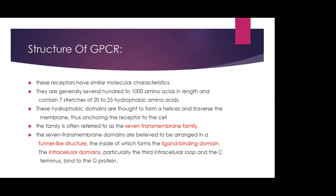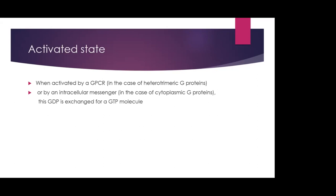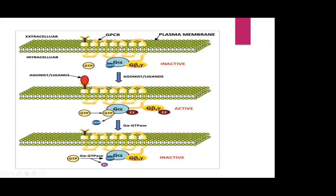G-protein coupled receptors have similar molecular characteristics. They are generally several hundred to thousand amino acids in length and contain seven stretches of 20 to 25 hydrophobic amino acids — hence the family is referred to as the seven transmembrane family. The seven transmembrane domains are arranged in a funnel-like structure, the inside of which forms the ligand binding domain. The intracellular domains, particularly the third intracellular loop and C terminus, bind to the G protein. G proteins are GTP binding proteins. At resting state they bind GDP, and when activated, this GDP is exchanged for GTP. The G protein consists of G-alpha, G-beta, and G-gamma subunits.